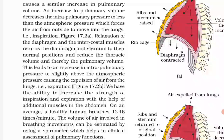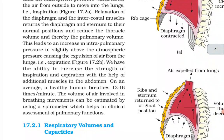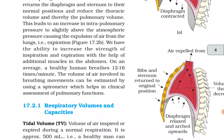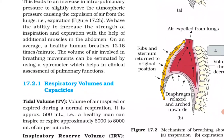The overall increase in thoracic volume causes a similar increase in pulmonary volume, and the increase in pulmonary volume decreases the intra-pulmonary pressure to less than atmospheric pressure, forcing air from outside to move into the lungs — that is inspiration. Relaxation of the diaphragm and intercostal muscles returns the diaphragm and sternum to their normal positions, reducing thoracic volume and thereby pulmonary volume, leading to an increase in intra-pulmonary pressure to slightly above atmospheric pressure, causing expulsion of air — that is expiration.